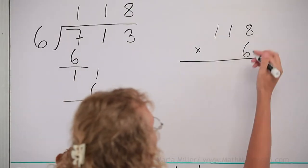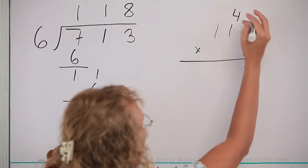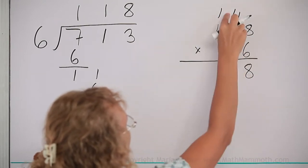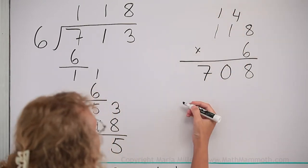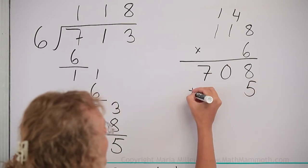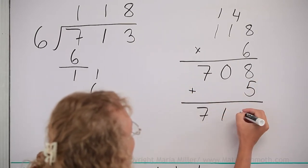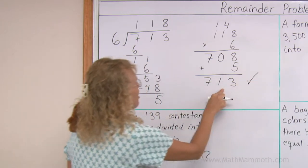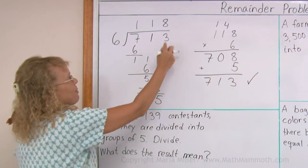So 6 times 8, 48. And then here 6 plus 4 is 10. And then 6 plus 1 is 7. And then add the remainder, and we get 713. So all is well, it checks, because 713 is the number we were dividing.